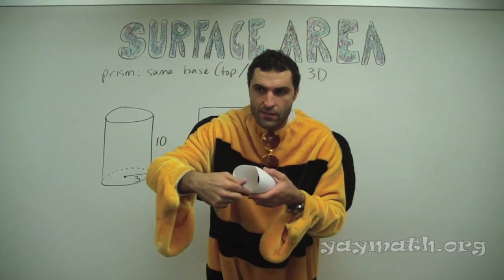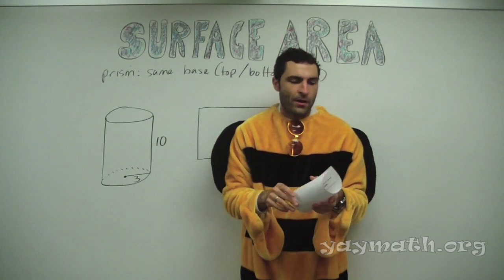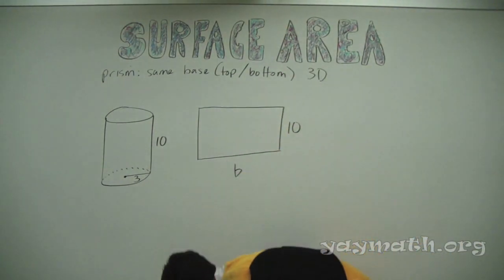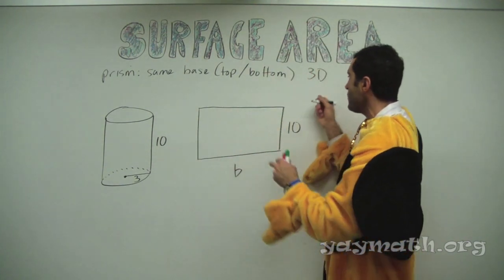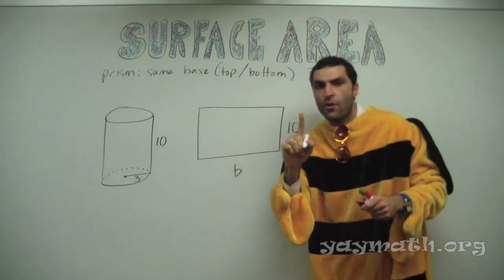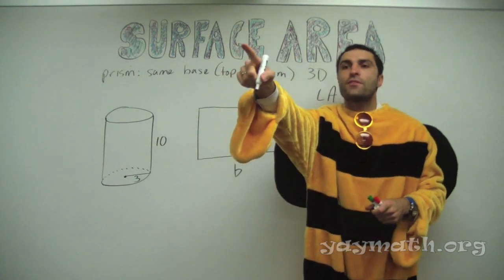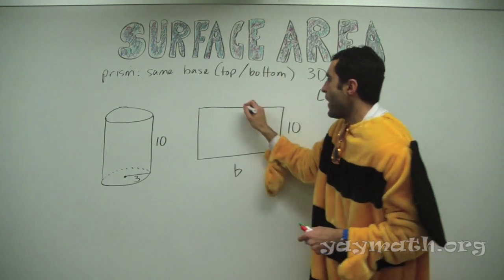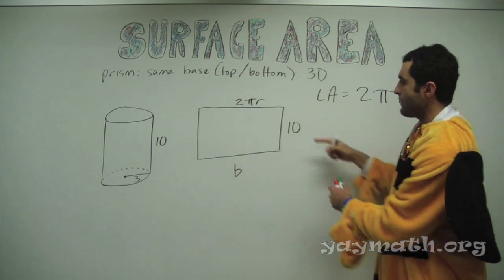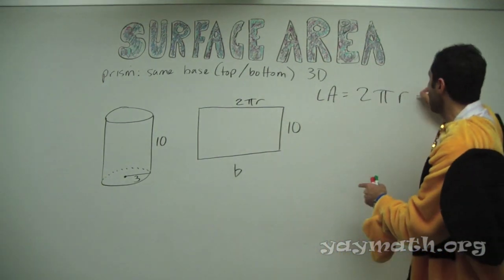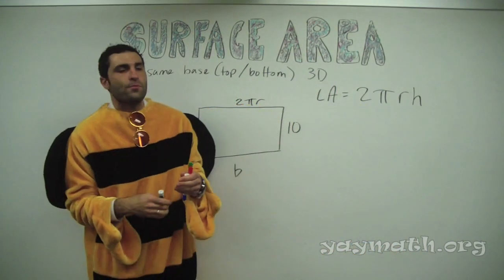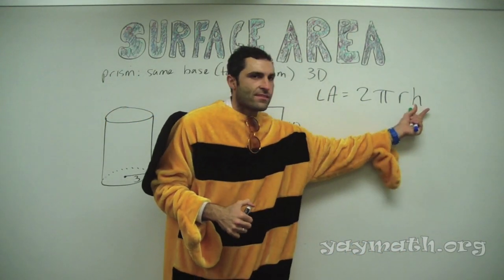Here's a confession. The books and everywhere across the country, they do lateral area equals 2πr times the height — they say 2πrh. Because this is the base and this is the height.